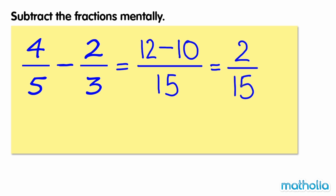2 fifteenths is in the simplest form. So, 4 fifths minus 2 thirds equals 2 fifteenths.